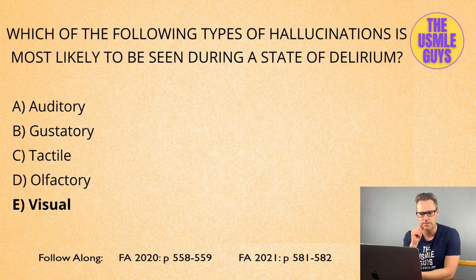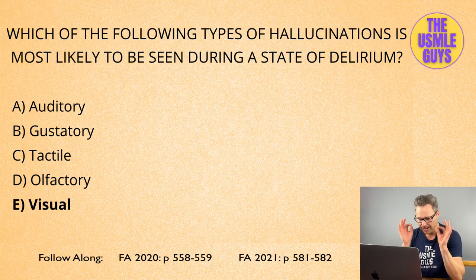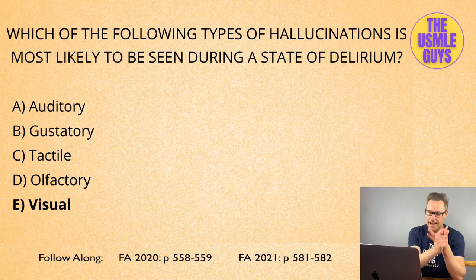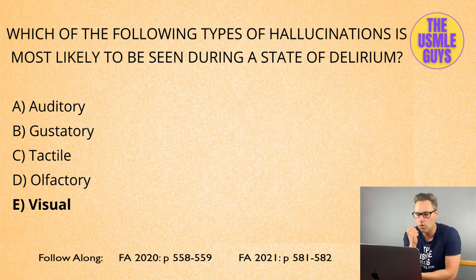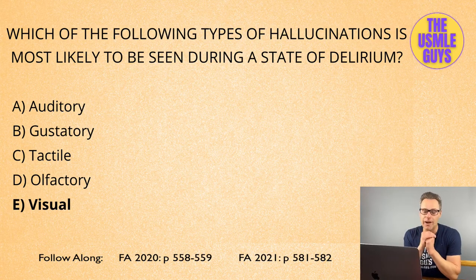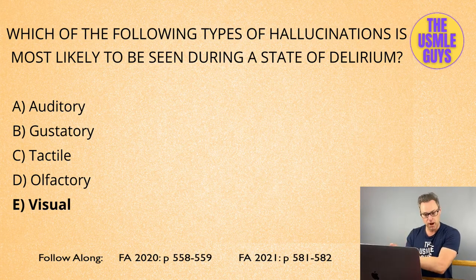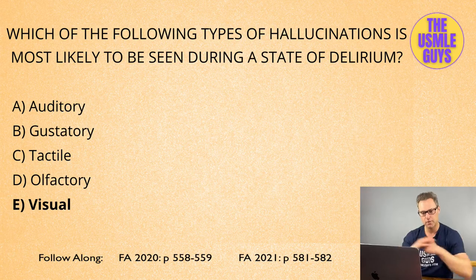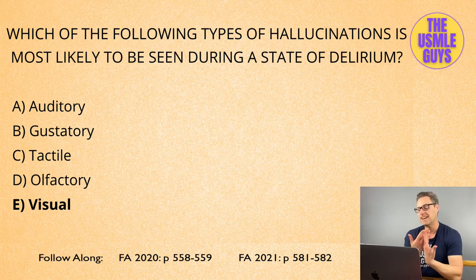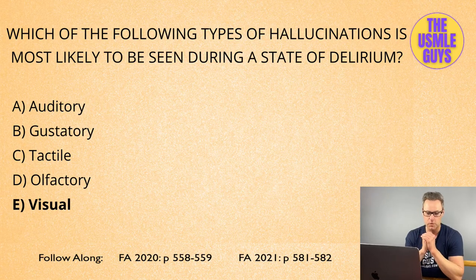Delirium is highly likely to be seen in patients in an inpatient setting, especially in the ICU or after a prolonged hospital stay. On EEG, you would see diffuse background rhythm slowing. Management is straightforward: identify the underlying problem and fix it. The visual hallucination is the most likely type you'll see in a delirious patient, but we still need to identify the other types of hallucinations.